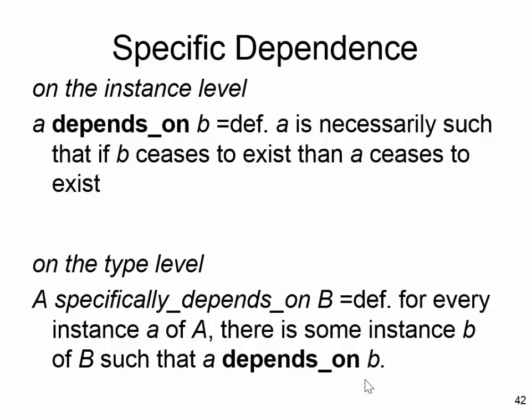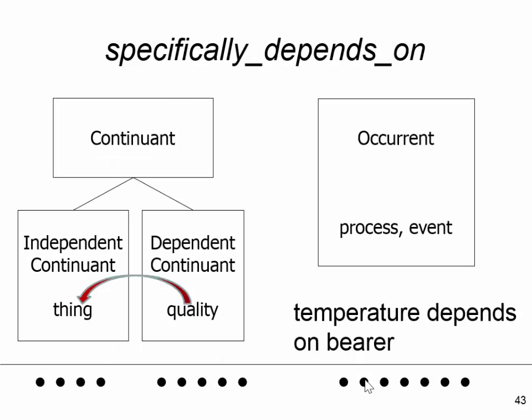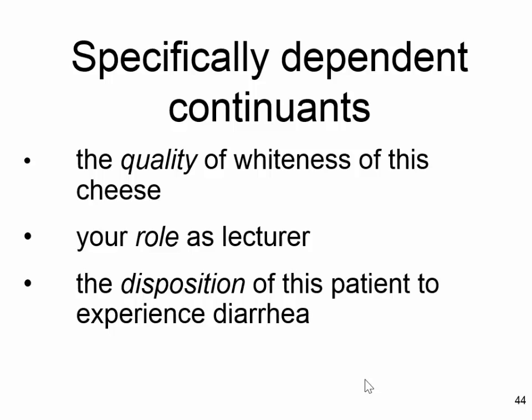This is under the hood, as it were — you can use BFO without knowing how to formulate these definitions, but the definitions are there in the documentation. Your temperature depends on you; you are the bearer of your temperature and it depends specifically on you — it's a quality. The quality of whiteness of a piece of cheese depends on the cheese. The role of the lecturer depends on the lecturer — it's a realizable specifically dependent continuant. The disposition of this patient to get diarrhea is dependent upon the patient.